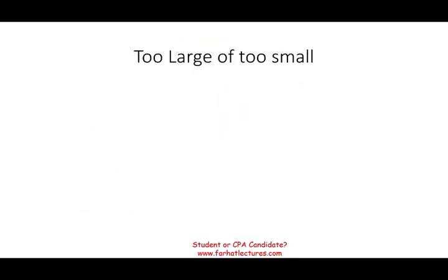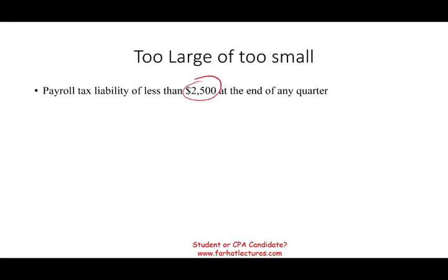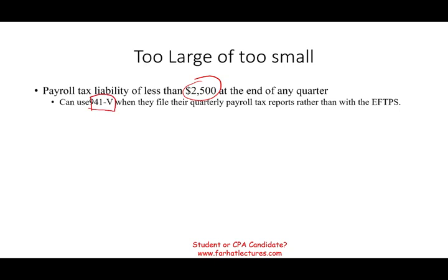What happens if you're too small? If your payroll tax liability is less than $2,500, you can pay this money at the end of the quarter. I had a lot of companies like this — they were self-employed and paid themselves a little bit of money, so they made one payment of under $2,500 at the end of the quarter. You can still use EFTPS, submitting the payment with Form 941 voucher when you fill out your quarterly return.